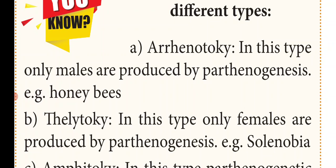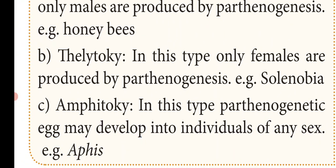Next is Thelytoky: in this type, only females are produced by Parthenogenesis — no males are produced by this method. Next is Amphitoky: in this type, Parthenogenesis may develop into individuals of any sex, either male or female. Example: Amphys.